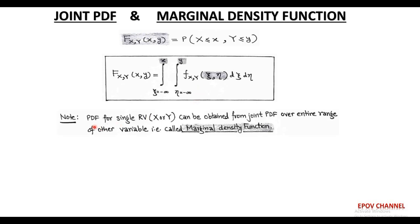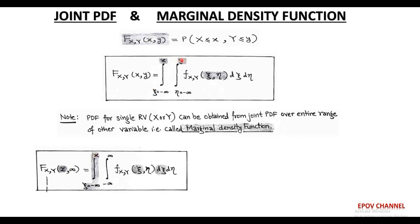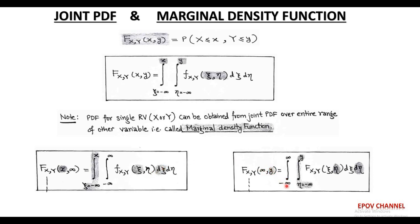To obtain a marginal density function, we take a finite range of one random variable and put an infinite limit on the other. For example, taking a finite limit of ψ from minus infinity to x and letting y tend to infinity, the function becomes capital F(x, ∞), called the marginal density function. Similarly, letting x tend to infinity and taking a finite limit of η from minus infinity to y gives the marginal density function capital F(∞, y). The marginal density function is thus the PDF of a single random variable obtained from the joint PDF by taking the entire range of the other random variable.